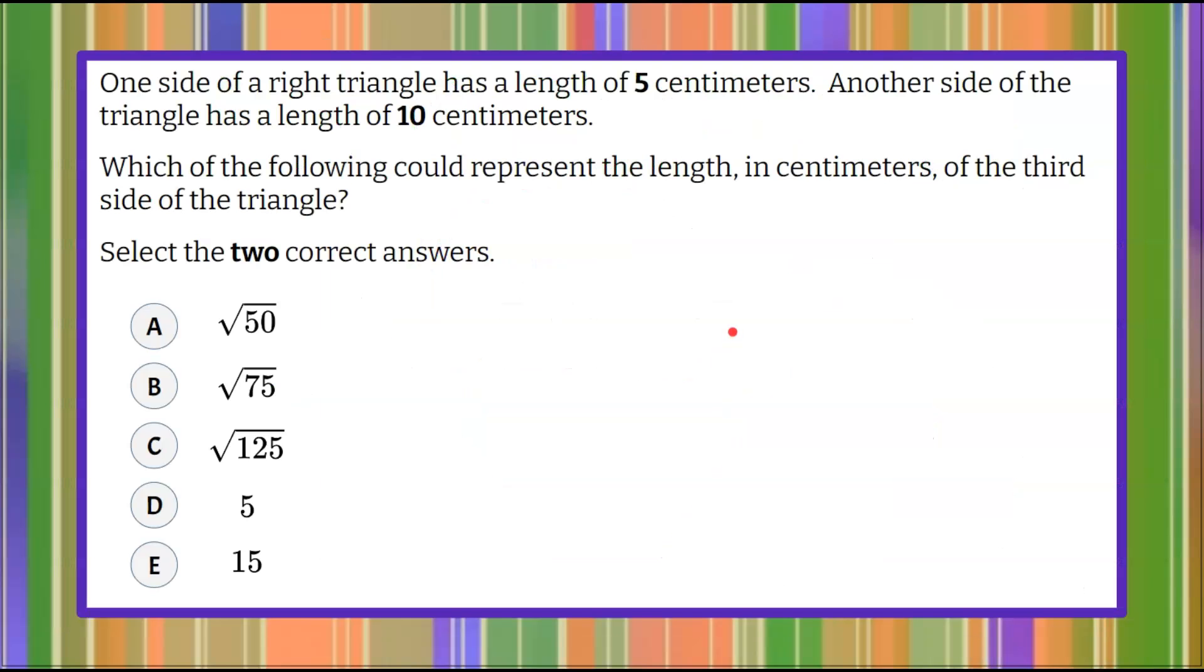So here we go. Here's our question today. We're told that one side of a right triangle has a length of 5 centimeters. Another side of the triangle has a length of 10 centimeters. We are asked which of the following could represent the length in centimeters of the third side of the triangle, and we're going to select the two correct answers. So we have five answer choices to pick from, and we're picking two. Here's where you pause the video, you do your best work, and then come back and hit play to see mine.